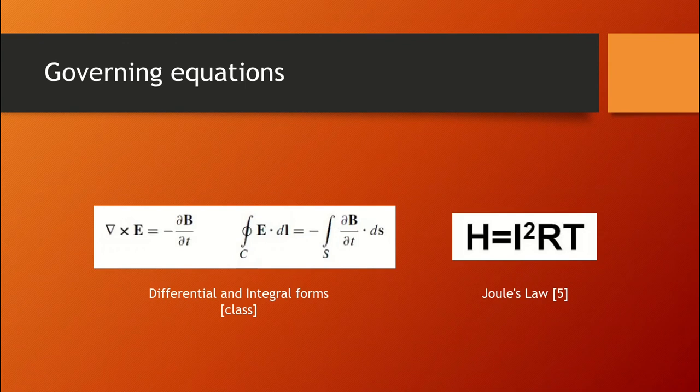Although the previous section was quite qualitative, we do have some very concrete equations to define and quantify this phenomenon. Namely, one of Maxwell's equations, or Faraday's law, and Joule's law. In essence, the first equation, which we can see on the left, describes that a change in magnetic flux will generate a current that will attempt to oppose the change induced by the magnetic flux.